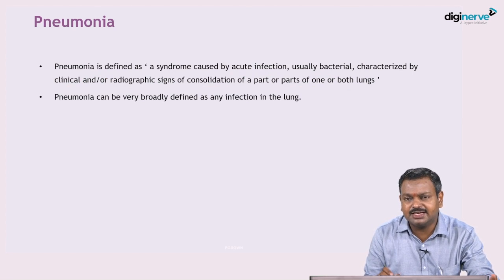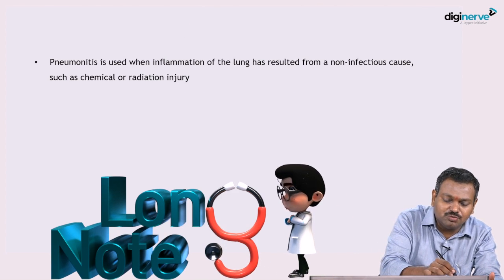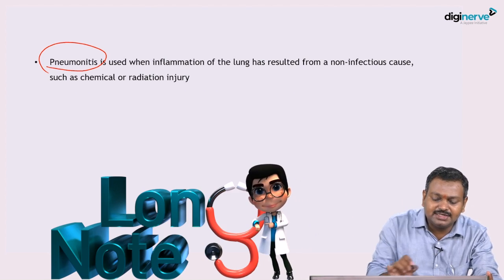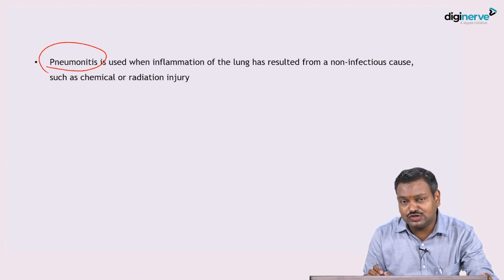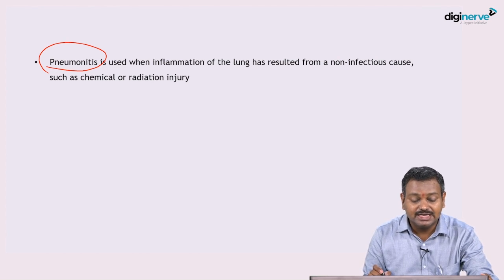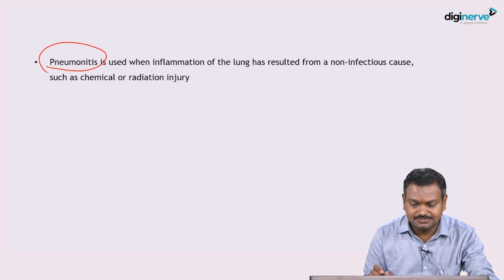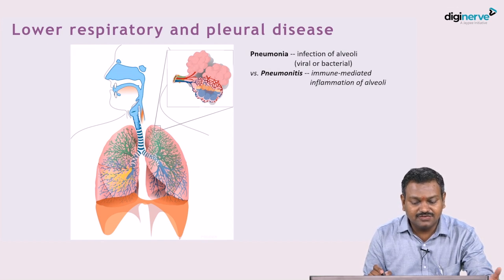In simple words, pneumonia is an infection of the lung. In contrast, pneumonitis is inflammation of the lung, which could be secondary to infection or non-infectious causes such as chemicals or radiation. When we discuss lower respiratory and pleural diseases, pneumonia involves the alveoli getting infected — bacterial or viral.